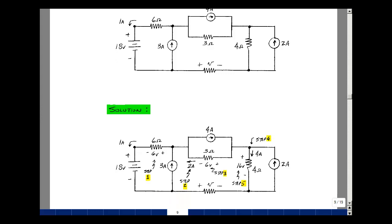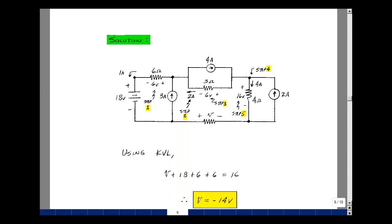So let's do Kirchhoff's voltage law around that loop. I'll start here and work my way around. I have a rise in voltage of V, a rise in voltage of 18, a rise in voltage of 6, a rise in voltage of 6, and then a drop of 16.